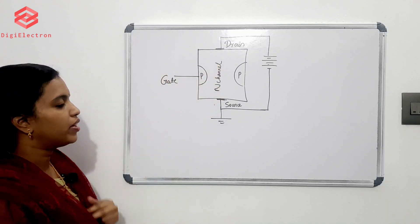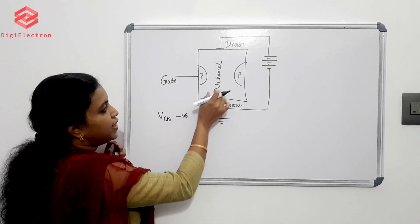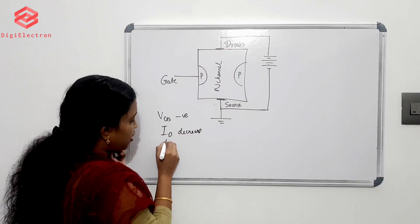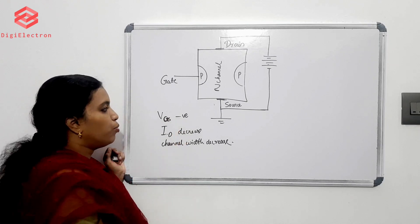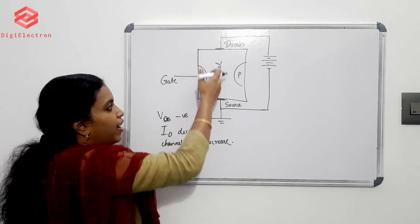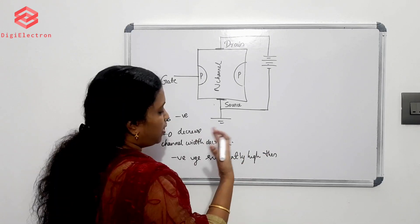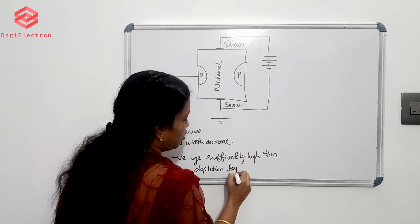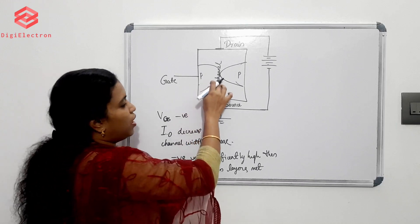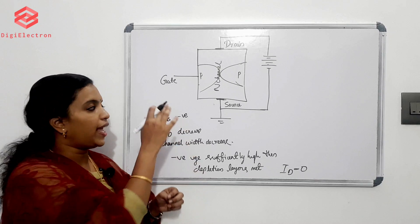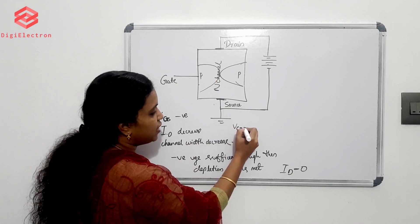We are going to look at the N-channel JFET structure. When the negative voltage is sufficiently high, these two depletion layers will merge. The channel is pinched off. This happens at a particular value of the VGS voltage.